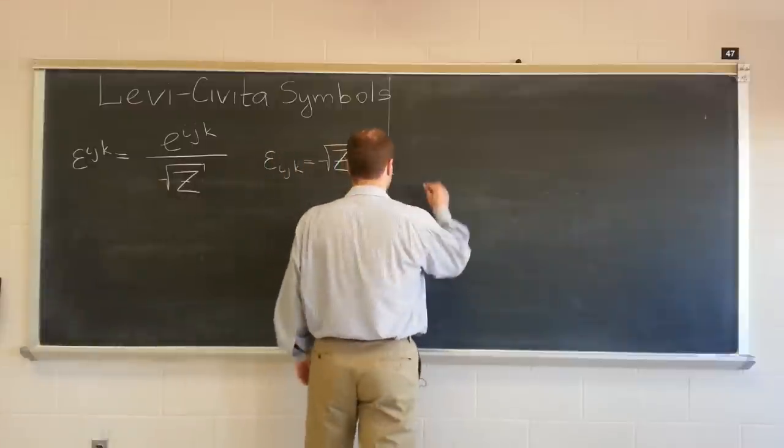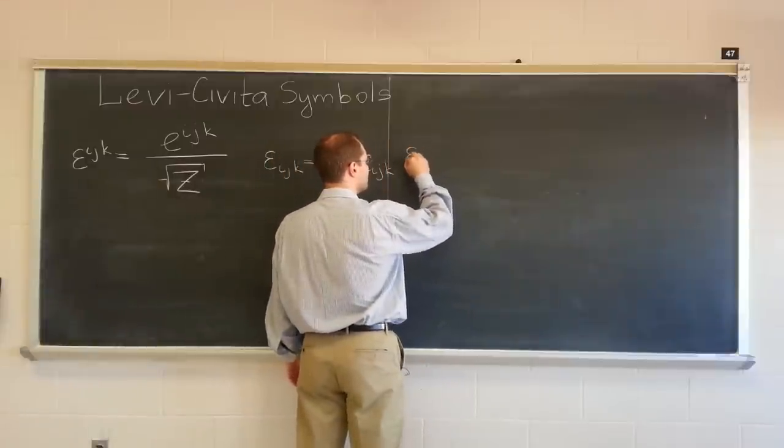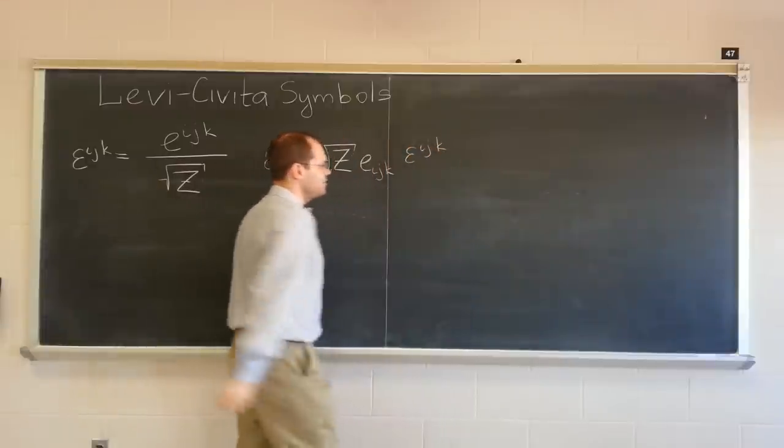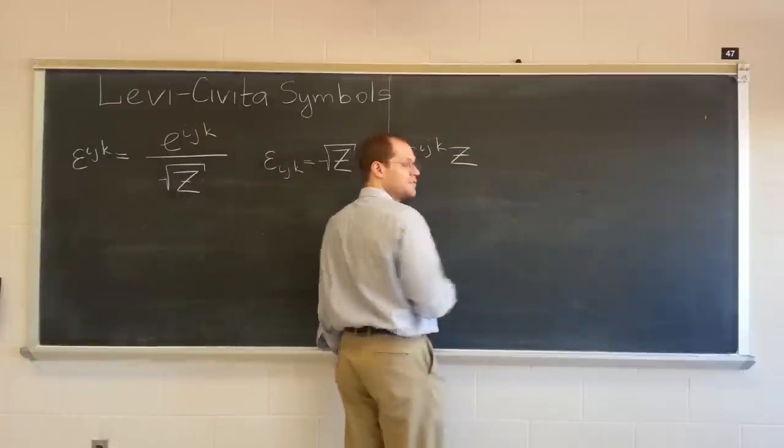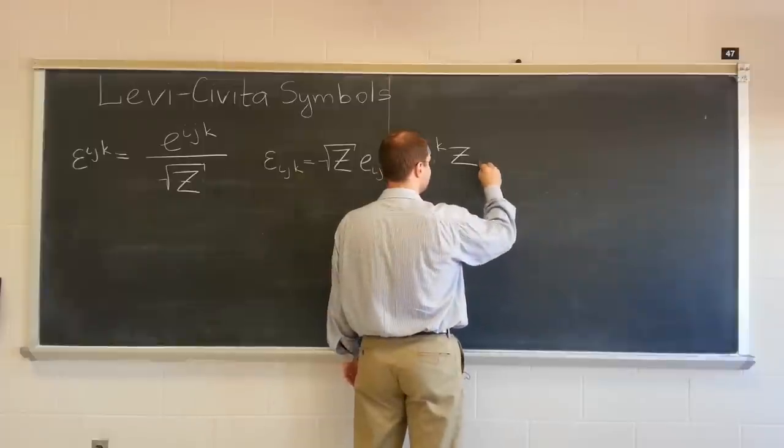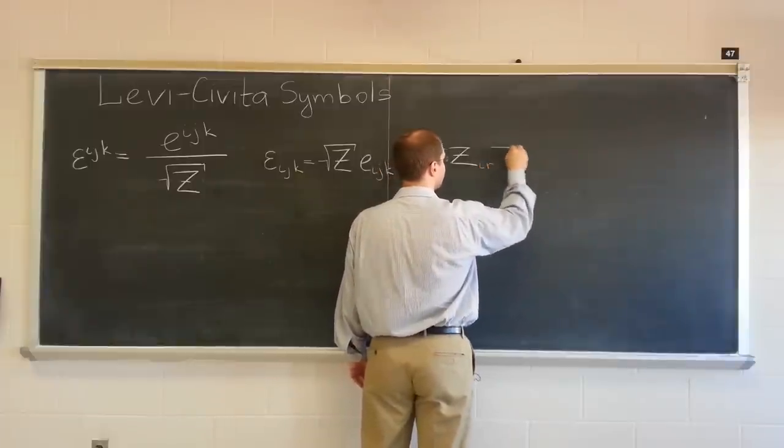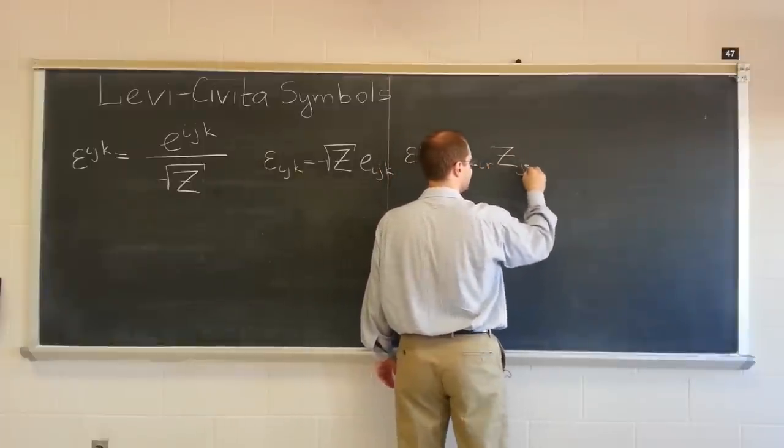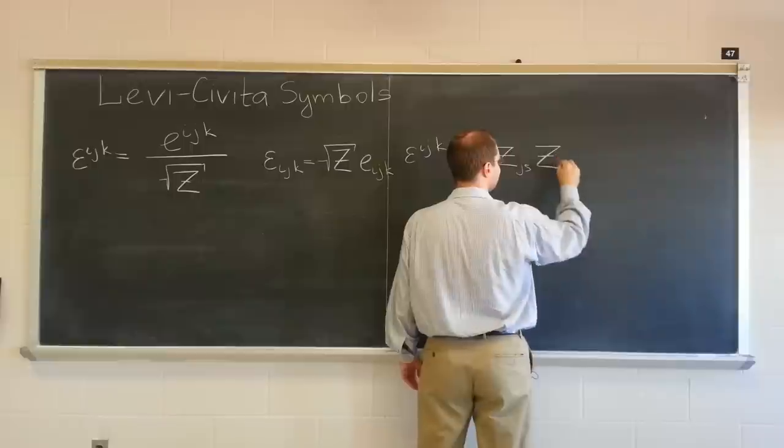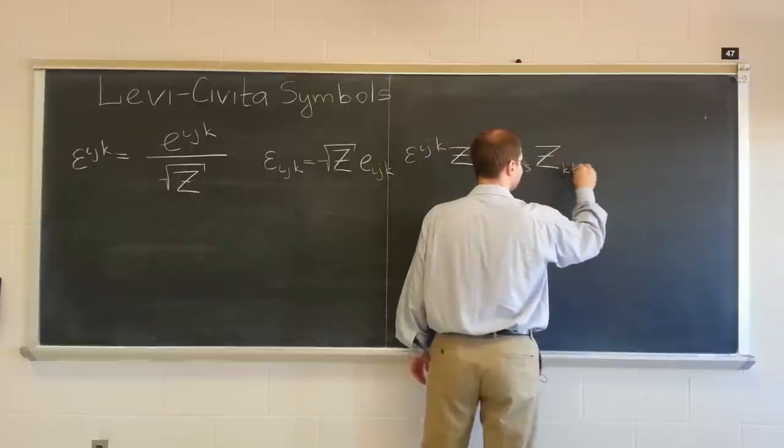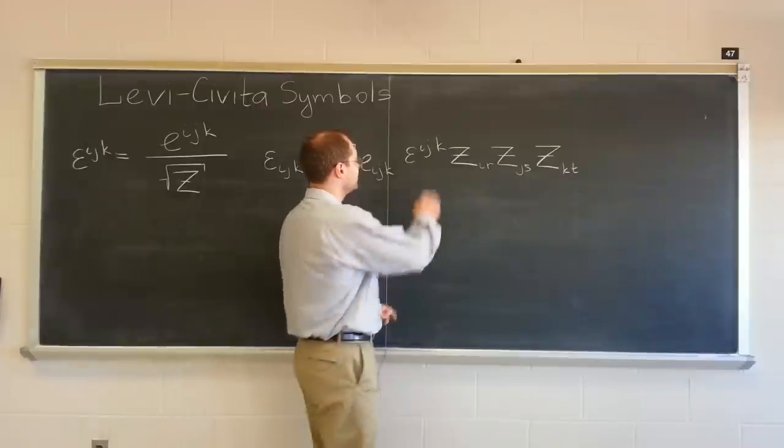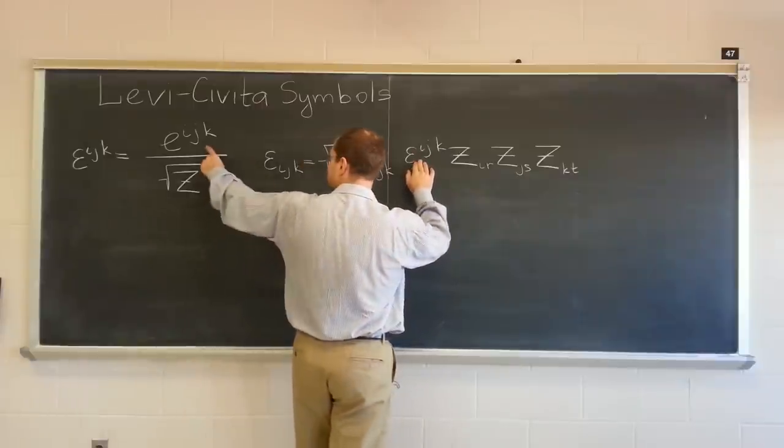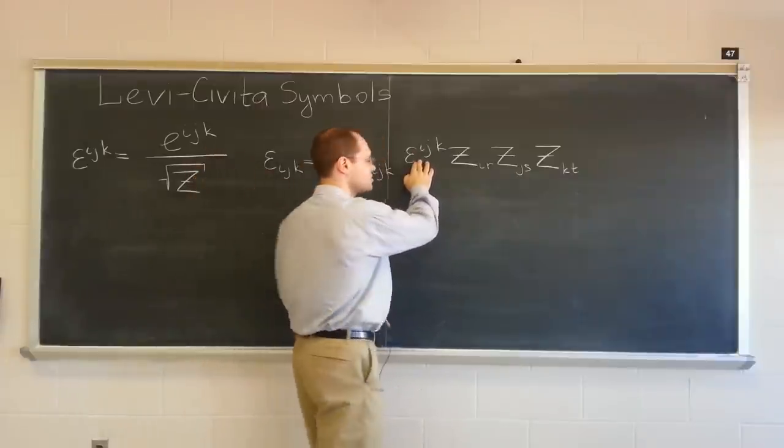So here is a simple proof. If I were to take the Levi-Civita symbol epsilon^ijk and lower each of the three indices, z_ir, z_js, z_kt. Now let's do a little bit of the analysis in our heads. So this equals the permutation symbol divided by the square root.